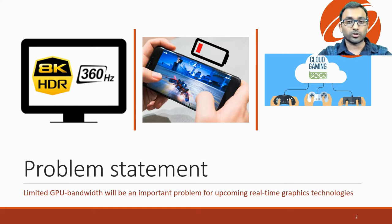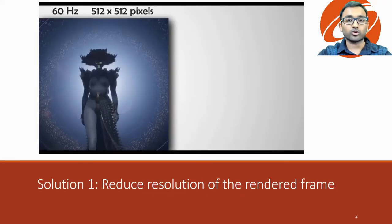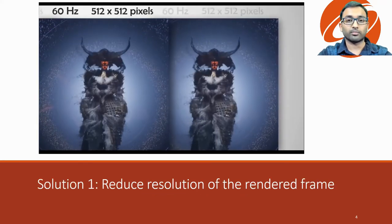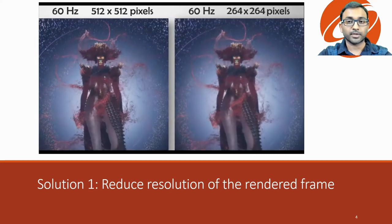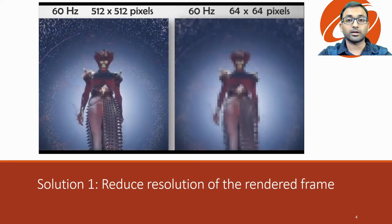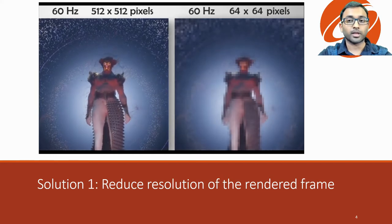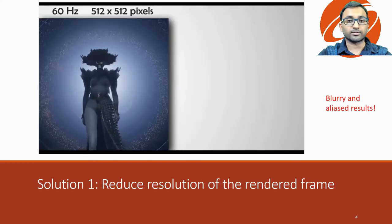This gives rise to an obvious question: given a constraint on GPU bandwidth, how to render? One of the most widely used solutions is to reduce the resolution of the frame buffer, depending on the available bandwidth. It is easy to implement and integrate into any graphics pipeline. However, as you can see in the video, it leads to blurry and aliased results.